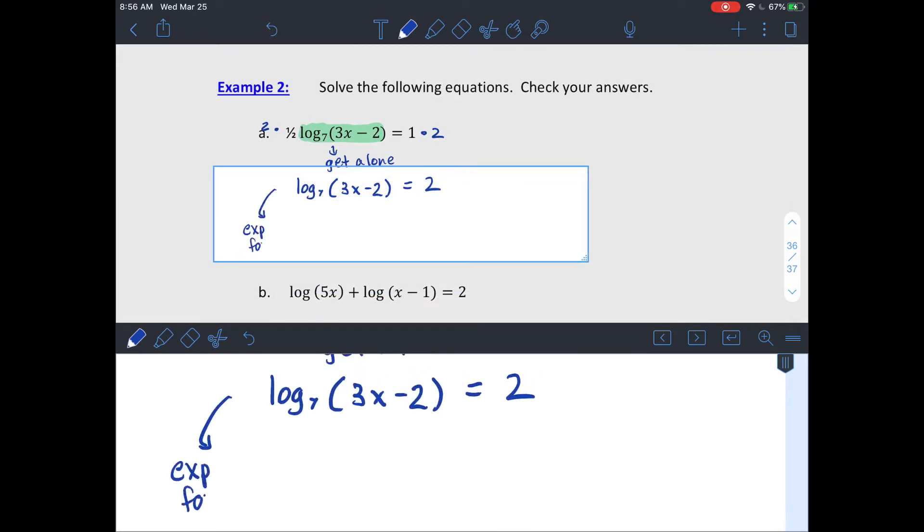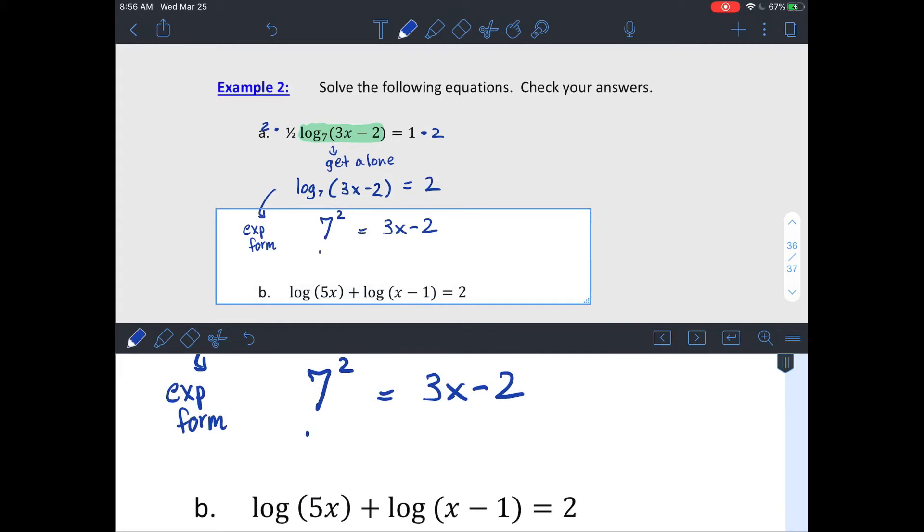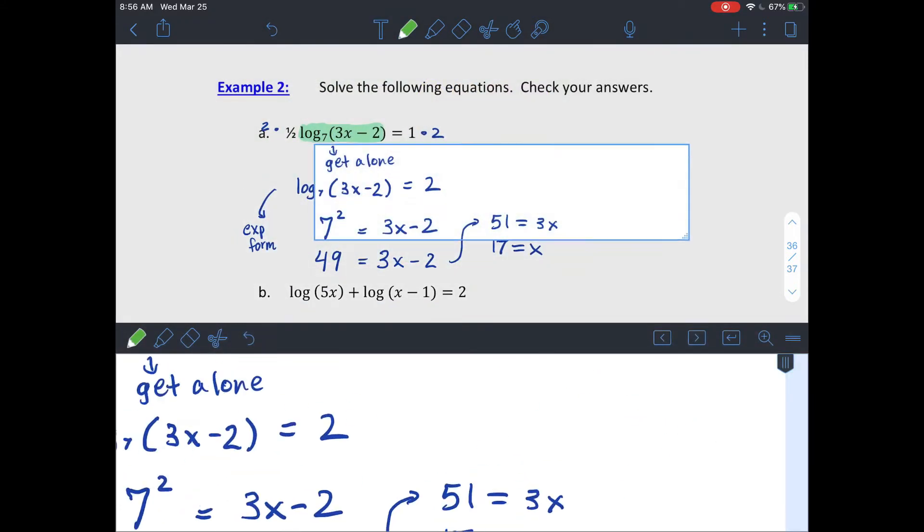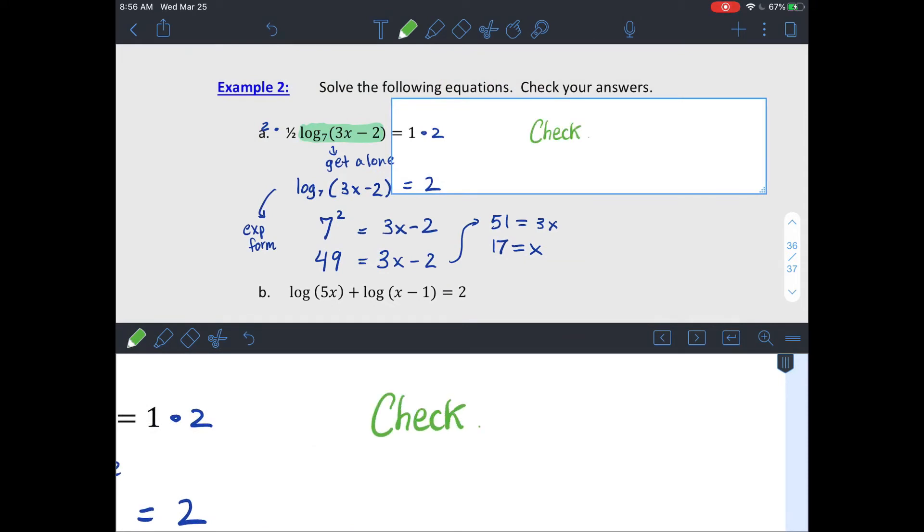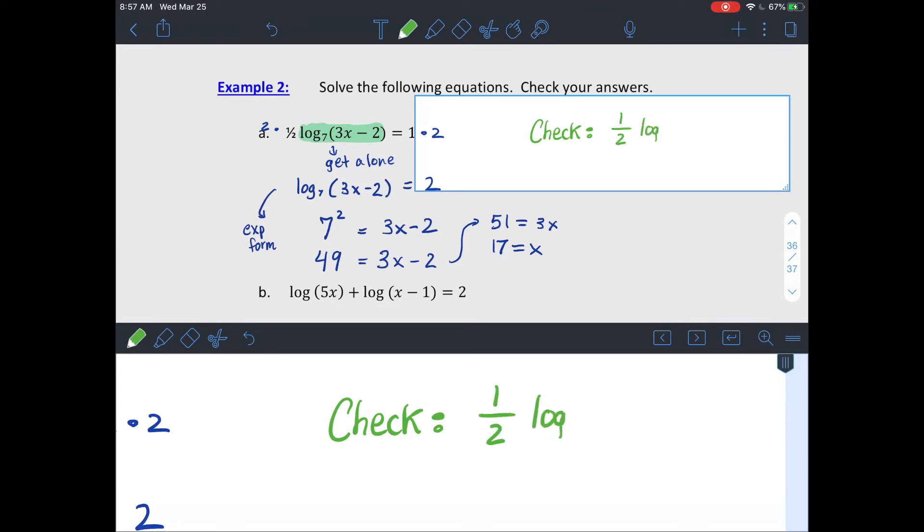So this is the same thing as saying 7 to the second power equals the inside of our logarithm. So that'd be 49 equals 3x minus 2. Add 2 would give you 51 equals 3x. And then divide by 3, and you're going to end up with x equals 17. So again, make sure that you check. At least go as far as to make sure that what you plug back in gives you a positive number inside of your logarithm. You can check it all the way through and make sure you're absolutely correct, which is always a good plan.